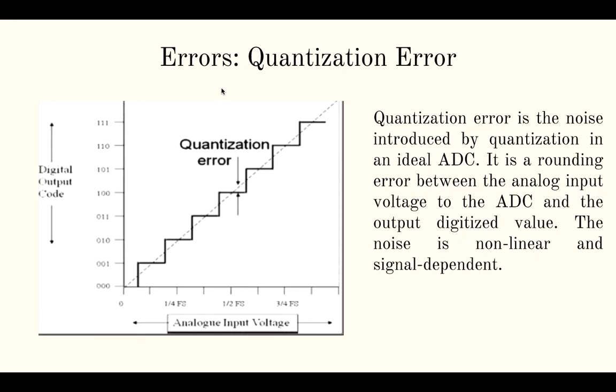Errors. We have few errors like quantization error here. The quantization error is the noise introduced by quantization in idle ADC. It is the rounding error between the analog input voltage to the ADC and the output digitalized value. The noise is non-linear and signal dependent. So we have a noise error here and the digital data are not clearly demarcated.